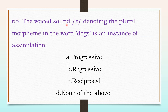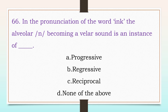The voiced sound denoting the plural morpheme in the word 'dogs' is an instance of which assimilation? Options: progressive, regressive, reciprocal, or none of the above. The answer is progressive. The next question's answer is: regressive.